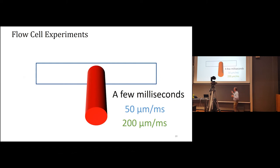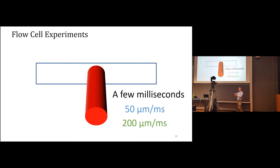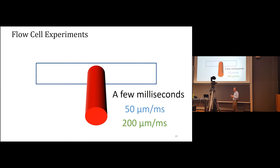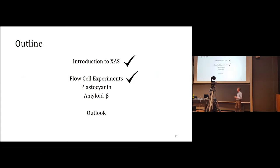Another thing to note about this microfluidics device is that even if some of the sample gets radiation damage — for example reduction of metal ions or breaking of bonds in the protein structure — because it's such a short time inside the beam and there is flow in the system, you could imagine it's a reversible reaction where the sample might heal itself before being measured again. This microfluidics device could really help the community in bio X-ray absorption spectroscopy. That's the appetizer project — the flow cell experiments.